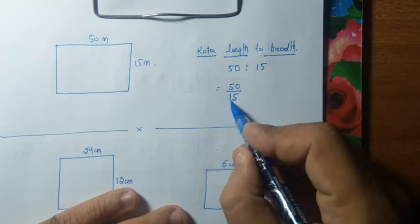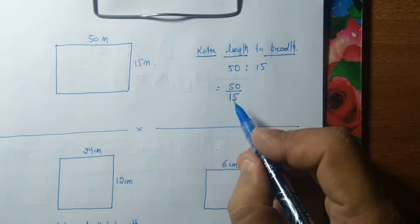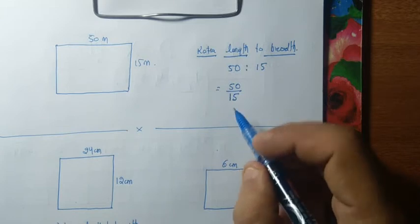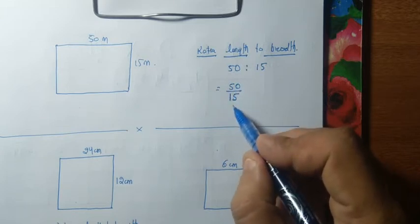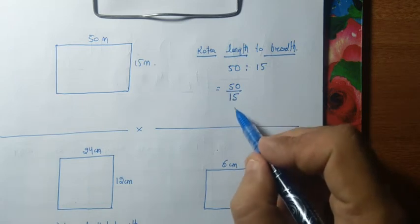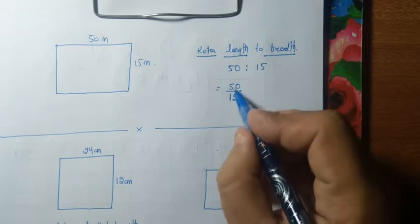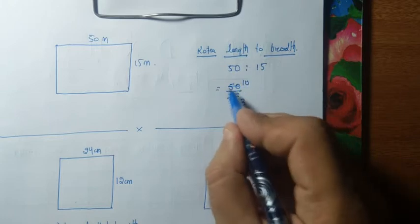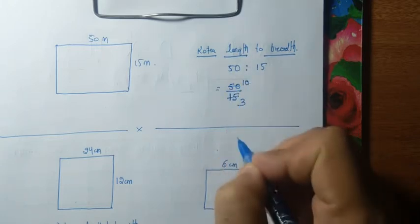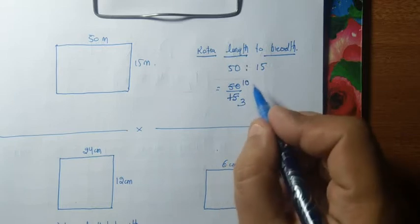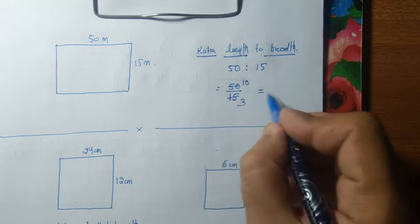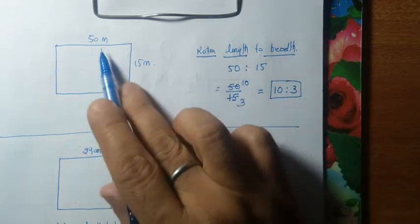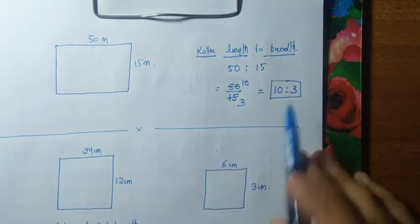If you apply divisibility rules, we find the common factor. 5 goes into both: 5 times 10 is 50, and 5 times 3 is 15. So we get 10 and 3. Now 10 and 3 cannot be further divided by 2, 3, or 5. So the ratio is 10 : 3. This is the ratio of the length and breadth of this playground — 10 is to 3.